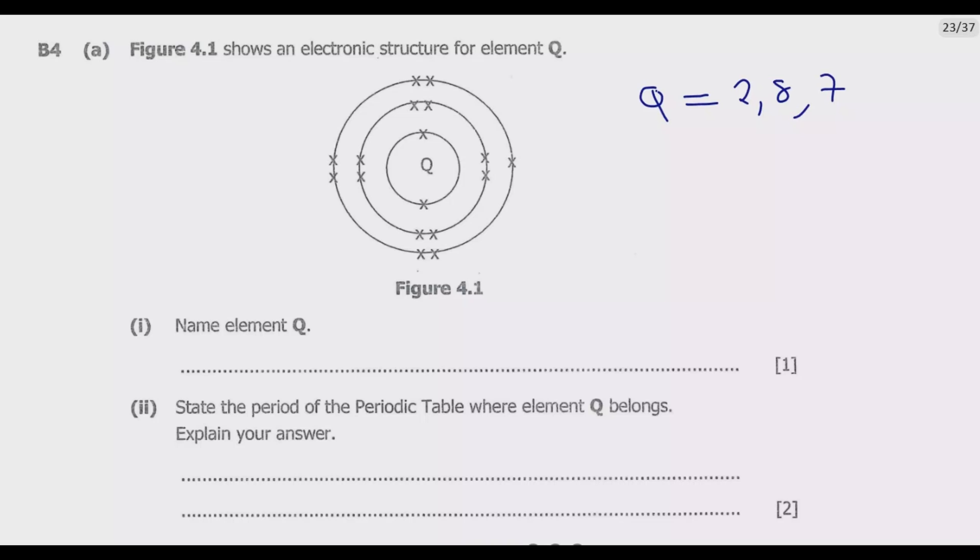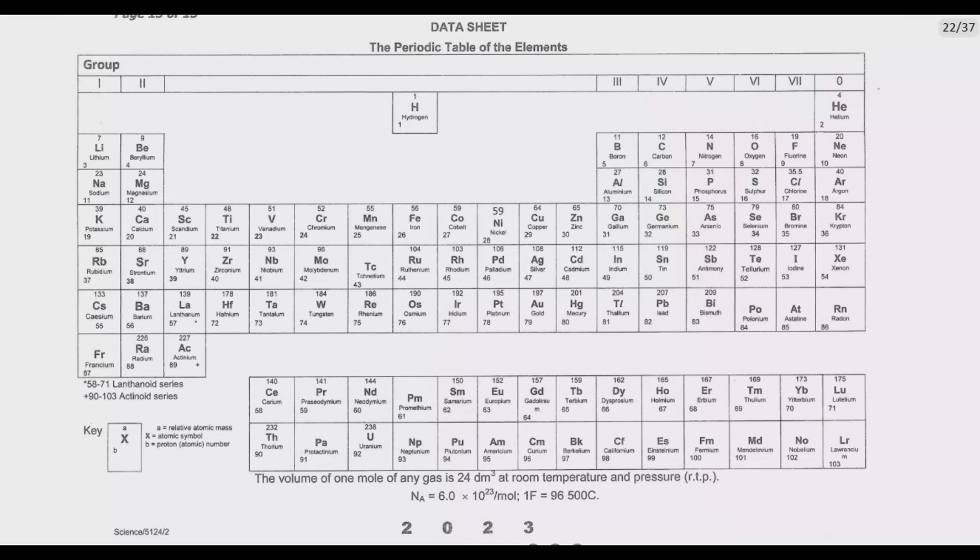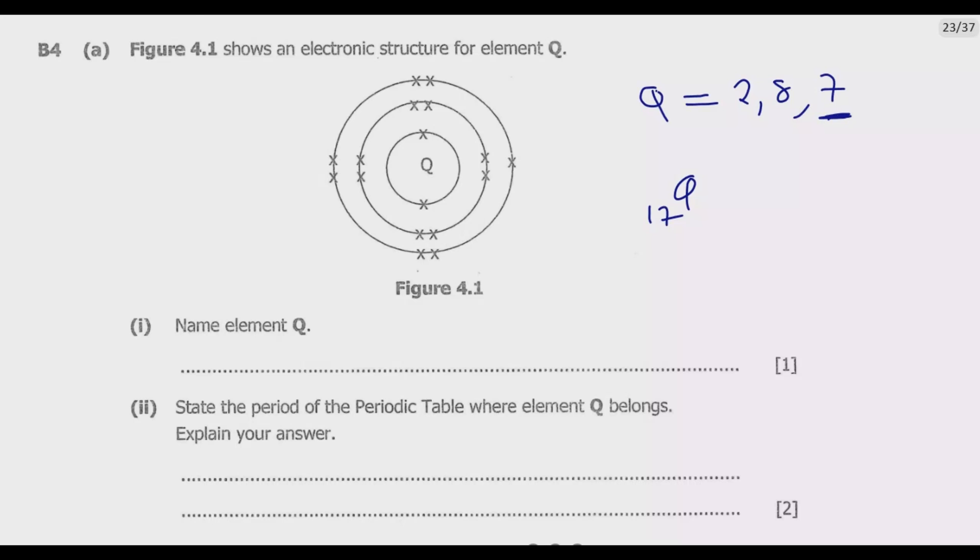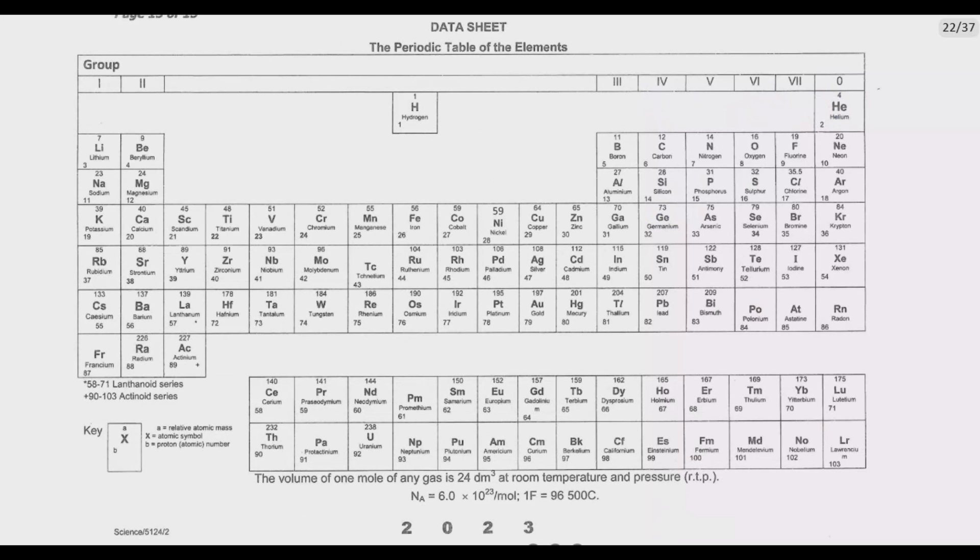So this element has this structure. It has 2 plus 8 is 10 plus 7, so this has the proton number of 17. We need to go to the periodic table and look for this element. There can only be one element with atomic number or proton number of 17, and it should be in periodic group 7. If you move down, you discover that this is the element which should be chlorine.